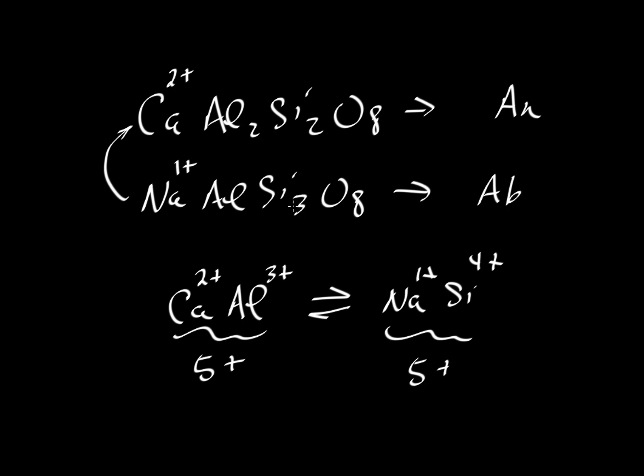So instead of 2 silicons we'll have 3 and we'll pull out one of the aluminums and put a silicon into a site that would be normally occupied by an aluminum. And again that allows us to maintain charge balance.